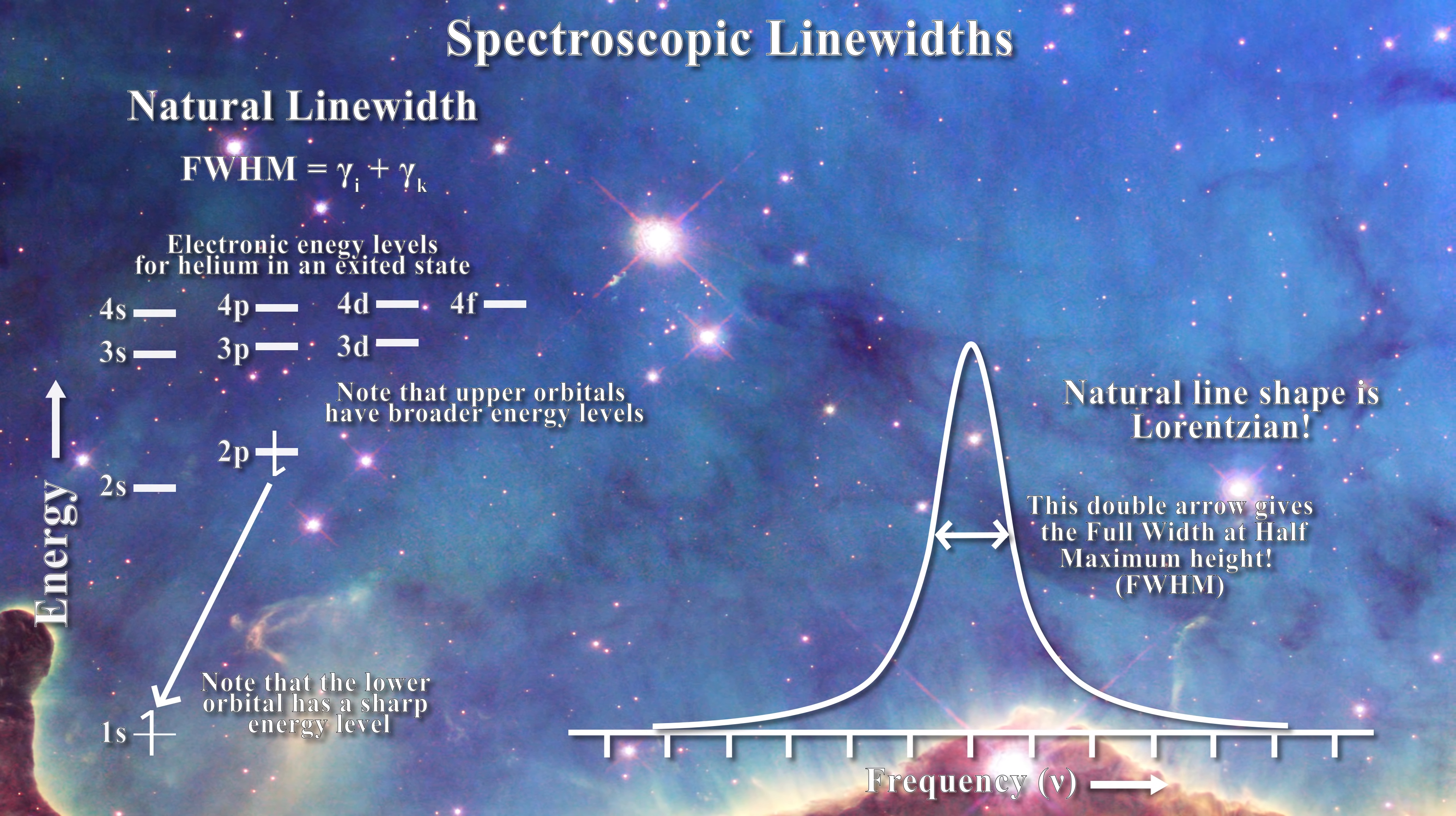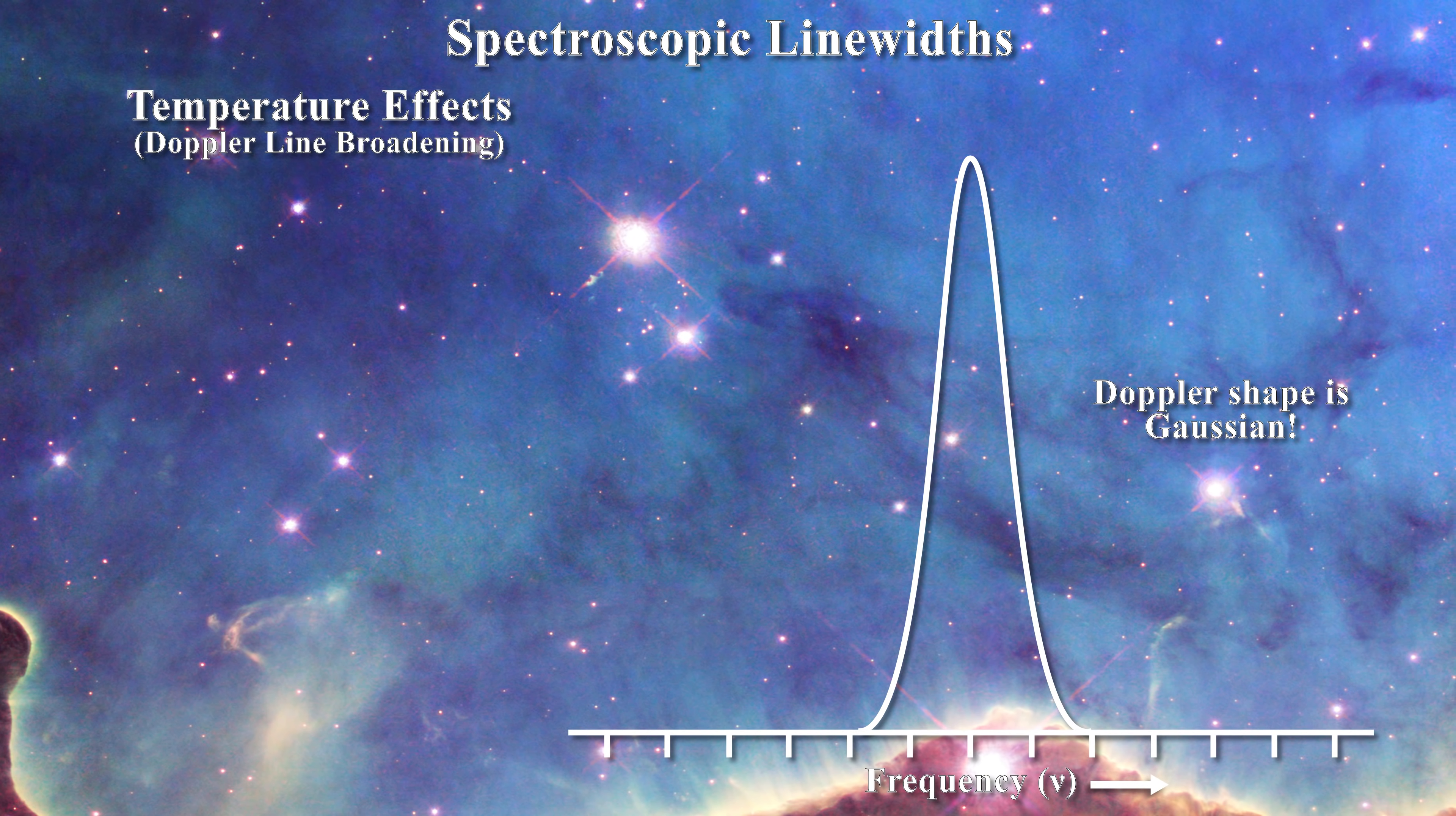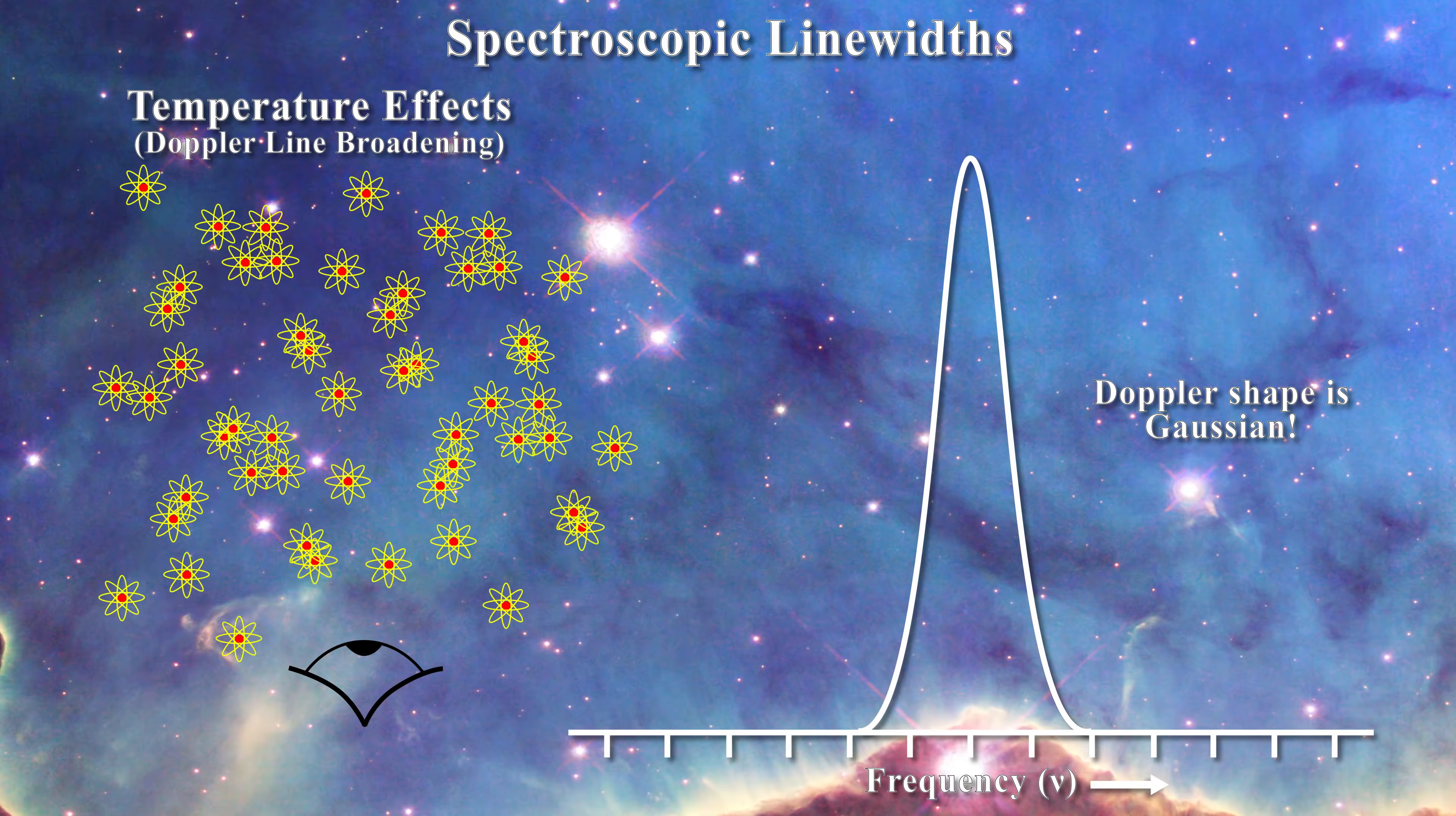Natural line broadening is not generally critical relative to understanding the sun because most solar lines have line widths which are much larger than would be expected from natural broadening. Beyond the natural line width, it is known that temperature can broaden a line. This is also known as Doppler line broadening and gives a Gaussian line shape. Note that now we are talking about the broadening of the spectral line, not its shift. Doppler line broadening is caused by random thermal motions of atoms in the source of the radiation.